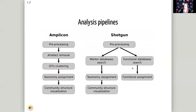Here's an overview of the analysis pipelines. For amplicon sequencing, in both cases we start with pre-processing — cleaning our data and assessing the quality. For amplicon sequencing we also remove sequencing artifacts called chimeras, then cluster very similar sequences into OTUs — operational taxonomic units — which are clusters of very similar sequences. Then we assign a taxonomy to these clusters and do some visualization. For shotgun sequencing, the left side of the pipeline is very similar, but on the right side we can also do an additional functional analysis.